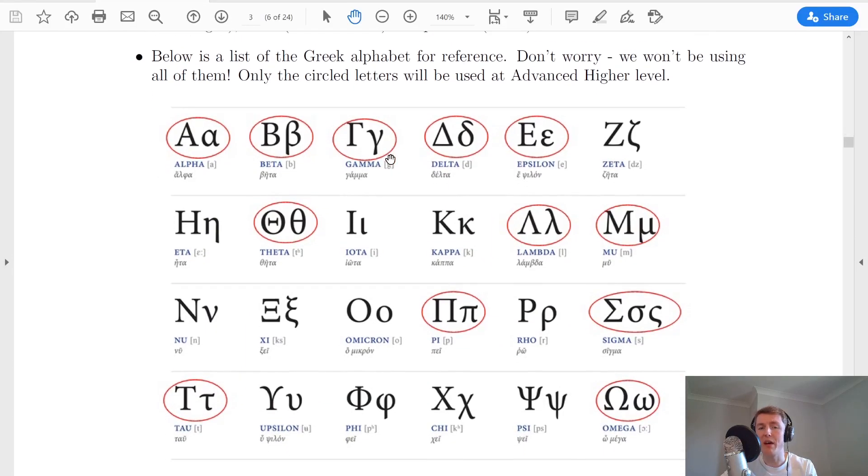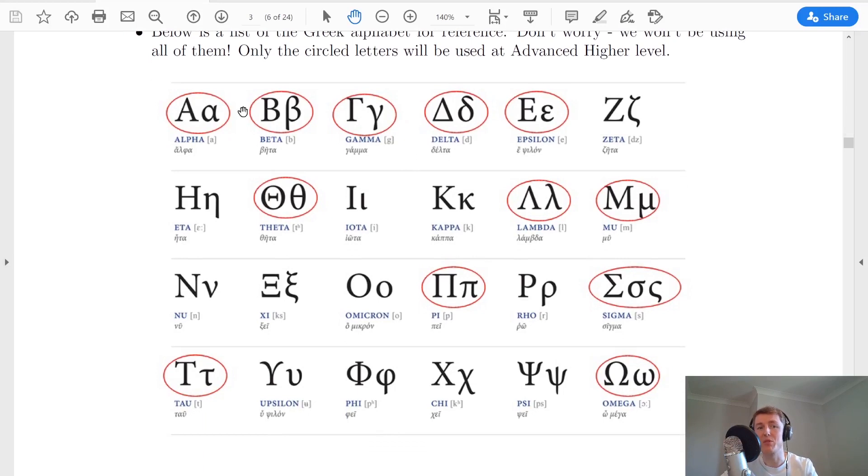Now you'll remember from National 5 and higher that we use the symbols of alpha, beta and gamma to be the three main types of radiation. We also use delta, this triangle, to mean change in.